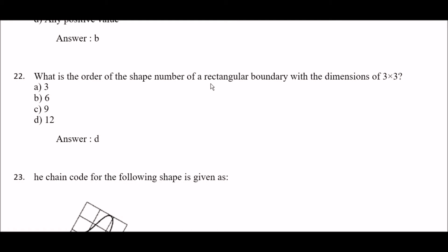Next question: what is the order of the shape number of a rectangular boundary with dimensions 3 × 3? Option A: 3, option B: 6, option C: 9, option D: 12. The right answer is option D — 12.